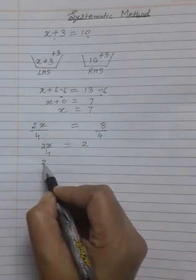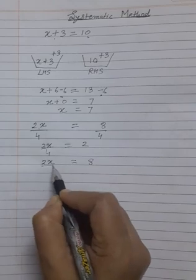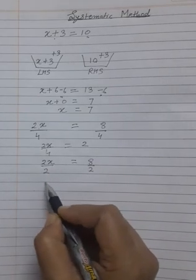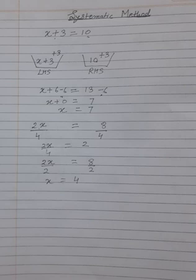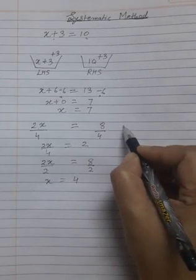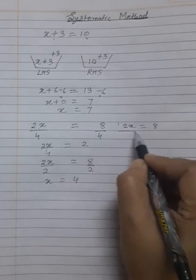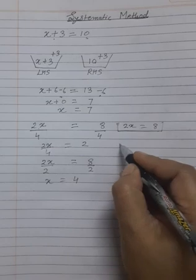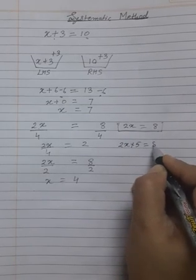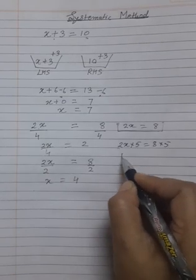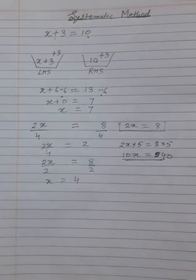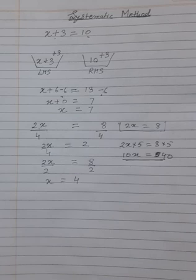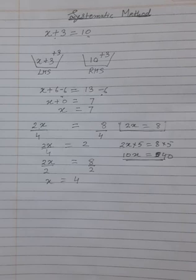Similarly, if I take the same equation 2x equals 8 and divide both sides by 2, then it becomes x equals 4. So x equals 4 is also a balanced equation. Again, if I take 2x equals 8 and multiply both sides by 5 — 2 times 5 gives 10x and 8 times 5 equals 40 — this is also a balanced equation.